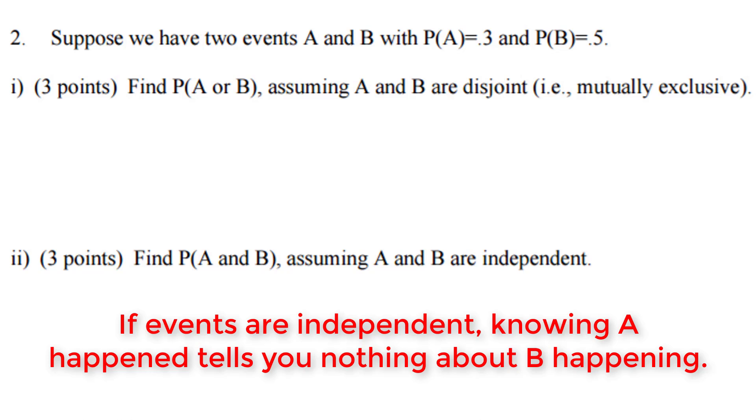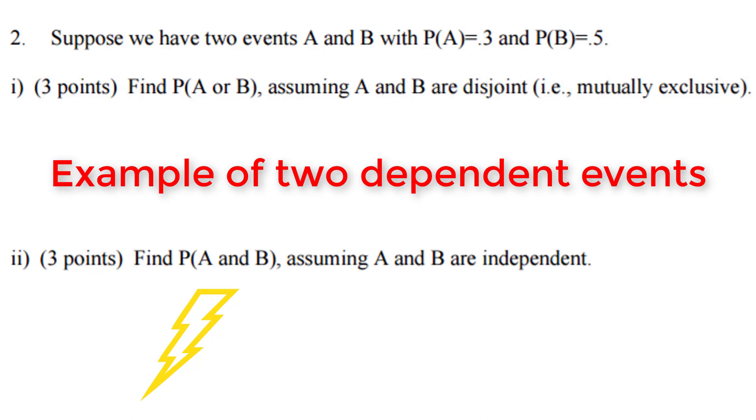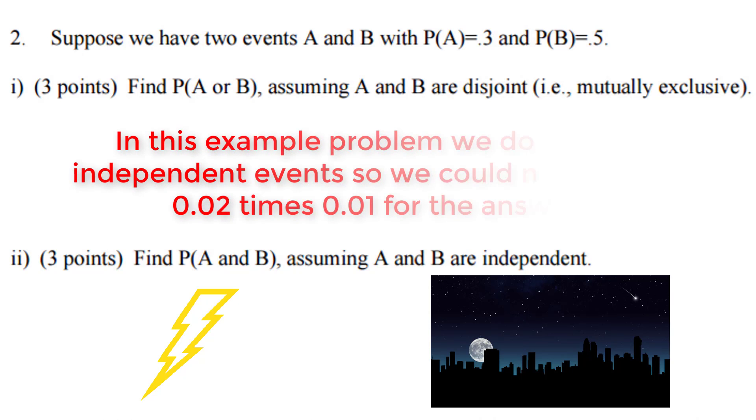Independent events do not change their probability if the other event happens. So let's think about two events that are very dependent. If I told you 2% of the time we have a storm in Knoxville, and 1% of the time your power goes out. Well, if we're having a large storm in Knoxville, the probability of your power going out would actually increase. So those are examples of dependent events.